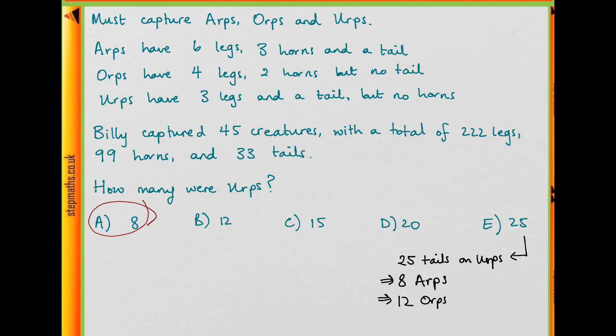Now, Arps have 3 horns. So that's 24 horns. And Orps have 2 horns. So that's 12 times 2, so again 24. And if we add 24 plus 24, that's going to give us 48 horns. But we need 99 horns in total. So we couldn't possibly have 25 Earps. And it's very similar if you want to check the other 3.